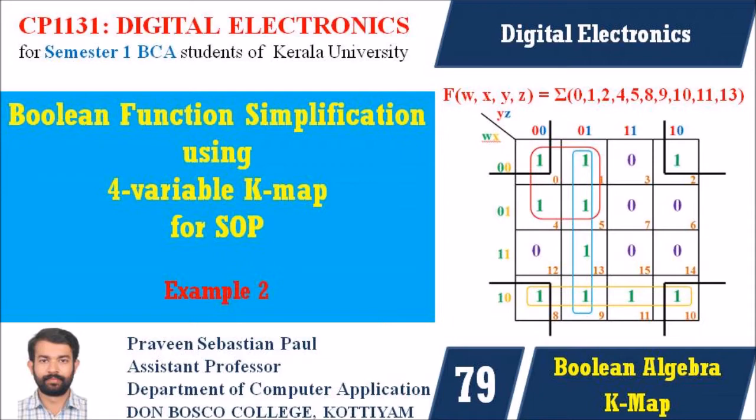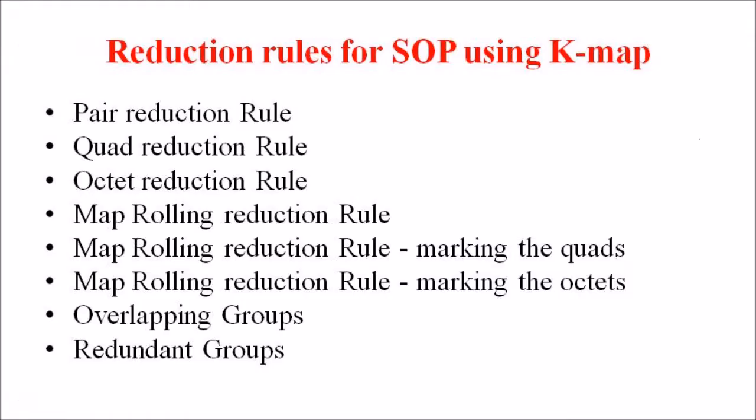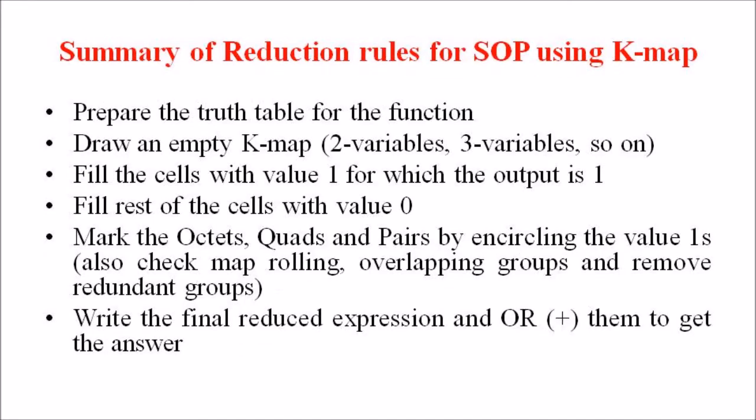In the last lecture we had considered an example for the four-variable Kmap solution, and in lecture number 71 we discussed different rules for Kmap reduction. Those rules include pair reduction, quad reduction, octet reduction, map-rolling reduction, overlapping group, and redundant group reduction rules. Kindly go through lecture number 71 for detailed coverage of these reduction rules.